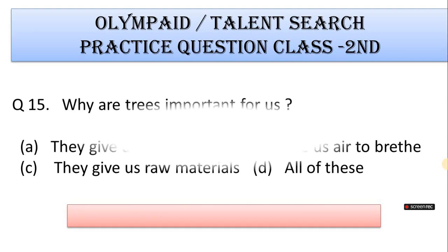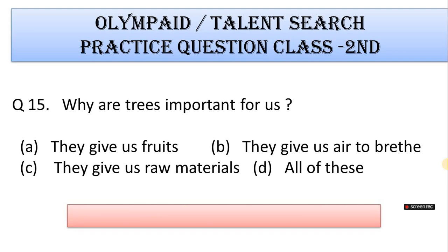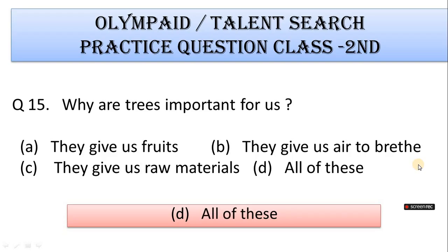Number 15: Why are trees important for us? A. They give us fruit, B. They give us air to breathe, C. They give us raw materials, D. All of these. Correct answer is Option D. All of these.